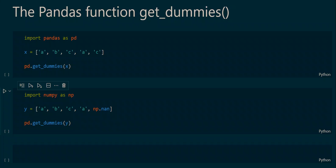Hello and welcome to a new pandas tutorial. In this tutorial we will learn all about the pandas function get_dummies, and this function converts categorical data into dummy or indicator variables. To get started we will have a look at a simple example to understand the basic functionality.